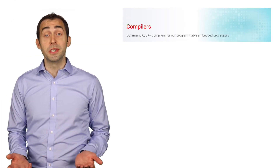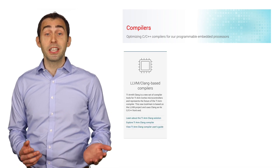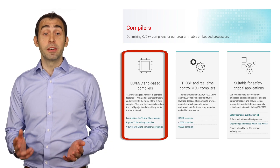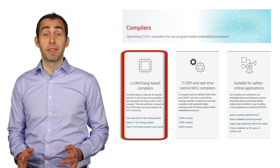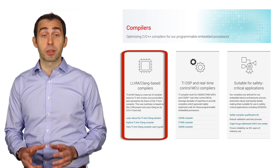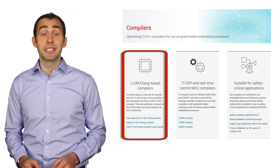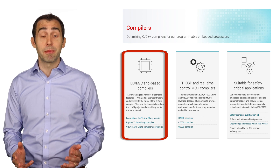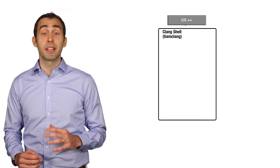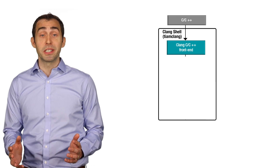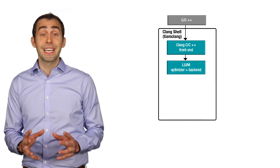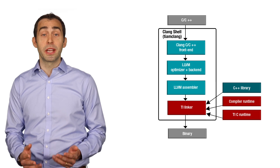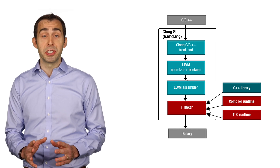We are introducing TIRM Clang, building on enhancements from the growing adoption of LLVM. LLVM is an open source project that provides building blocks for creating compilers. Clang is an LLVM subproject and is the C and C++ compiler front end. We have combined the Clang front end and LLVM optimizer with advanced TI linker technology to give you a toolchain that produces efficient code and is compatible with GCC.